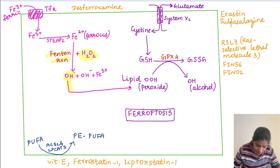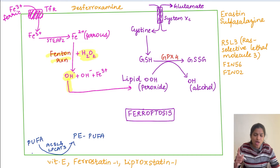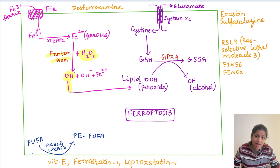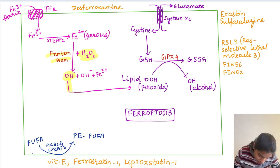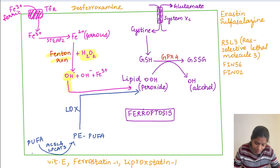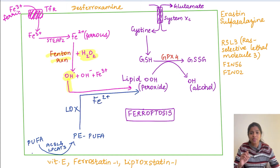The second pathway involves membrane polyunsaturated fatty acids (PUFA). With the help of enzymes ACSL4 and LPCAT3, PUFA is converted into phosphatidylethanolamine-PUFA (PE-PUFA). Then the enzyme lipoxygenase (LOX), in the presence of iron, converts PE-PUFA into lipid peroxides. This is the second mechanism leading to lipid peroxide formation.